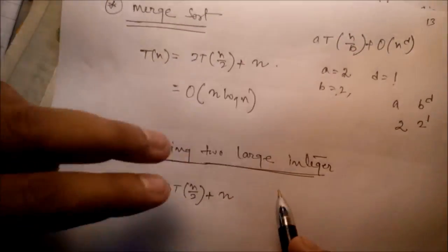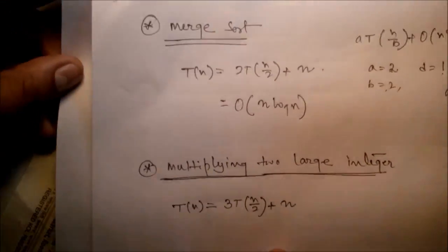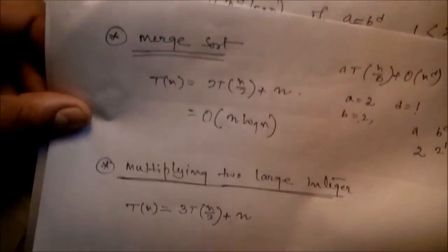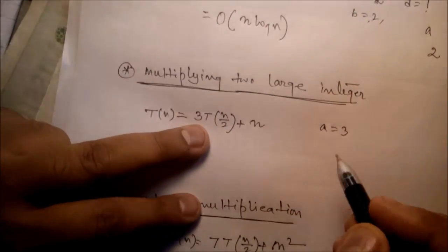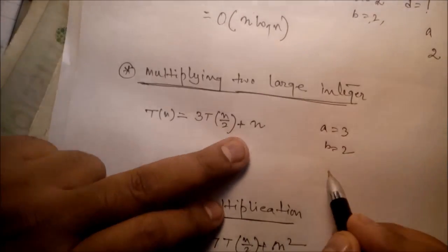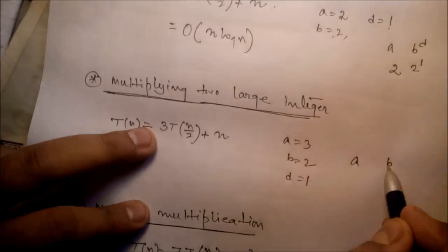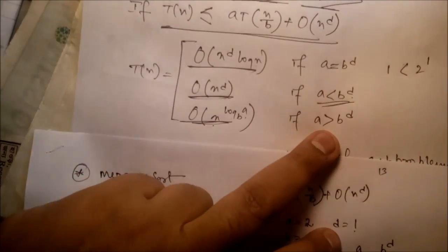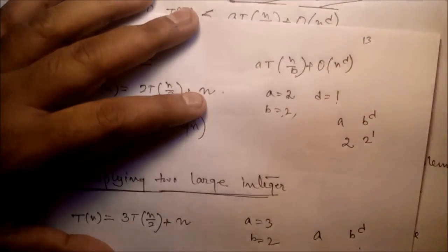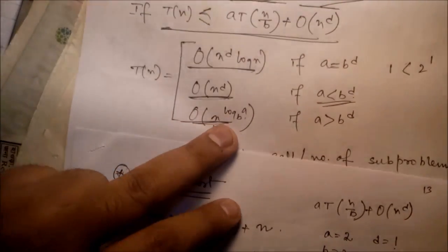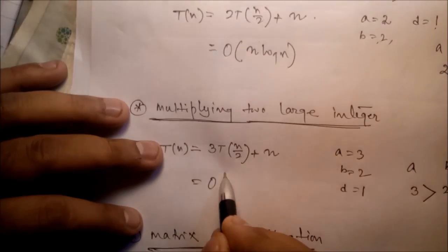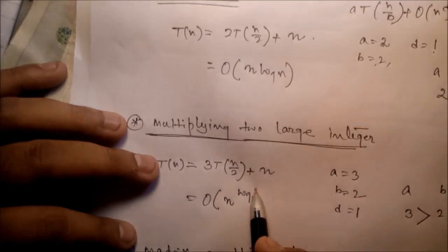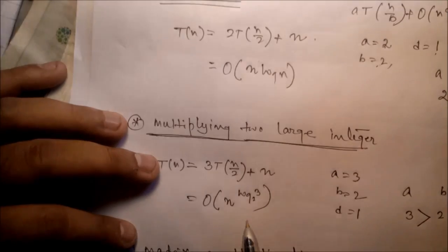For multiplying large integers: T(n) = 3T(n/2) + O(n). Here a = 3, b = 2, d = 1. Check: b^d = 2^1 = 2, and a = 3, so a is greater than b^d. Therefore, complexity is O(n^(log_b a)) = O(n^(log₂ 3)).